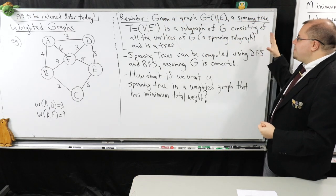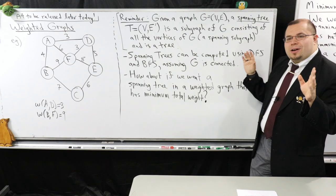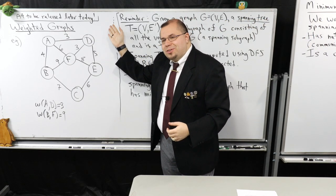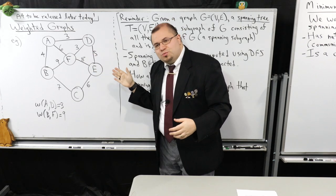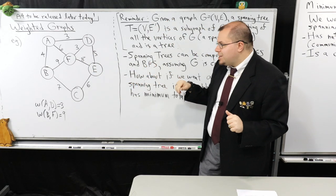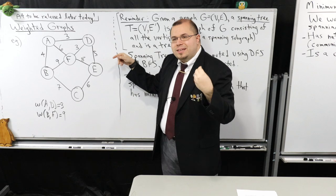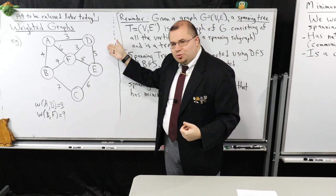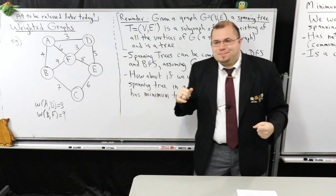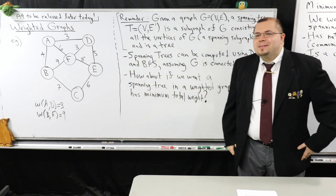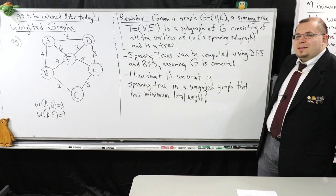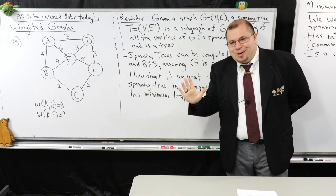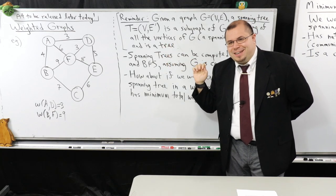Is everything clear about weighted graphs? Just remember, I'm going to assume that there's this weight function — a weight or cost function — that assigns to each edge a number. That'll be what we call the weight or cost of the edge. Give me a thumbs up if we're all good.